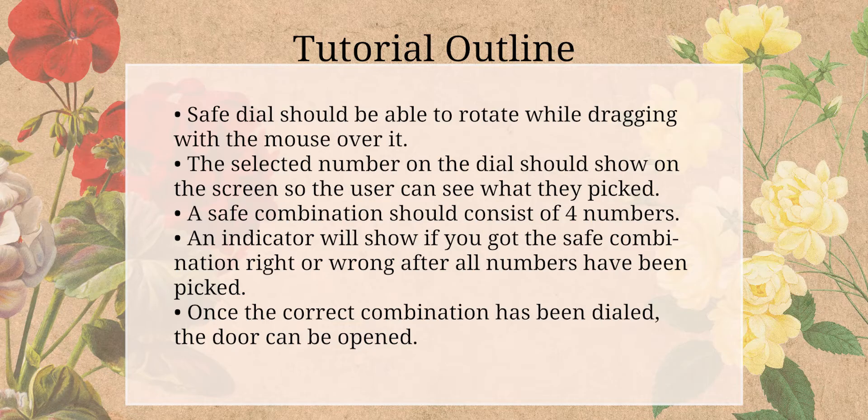The safe dial should be able to be rotated by first clicking on it and then dragging with the mouse. The selected number on the dial should be shown on the screen clearly so the user can see what they picked. A safe combination is going to consist of four numbers, and once the player has chosen these four numbers, an indicator is going to show if you got the safe combination right or wrong. And if it's correct, then the door is going to be openable by clicking on the handle.